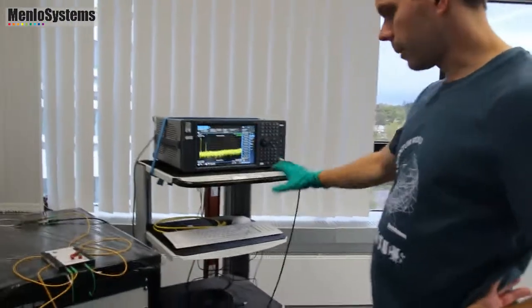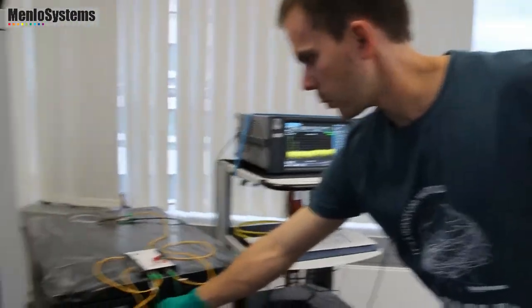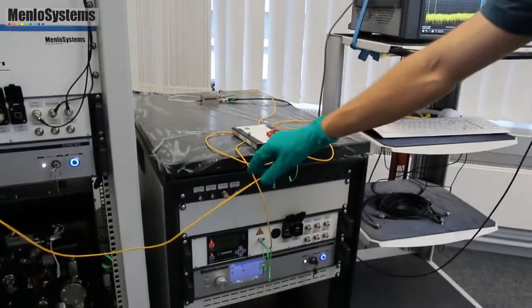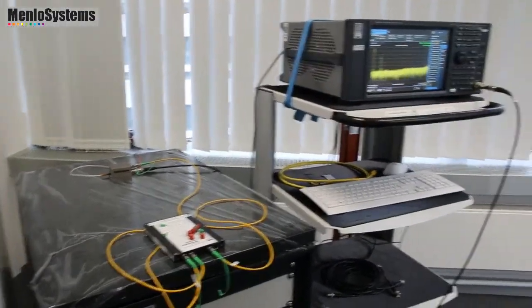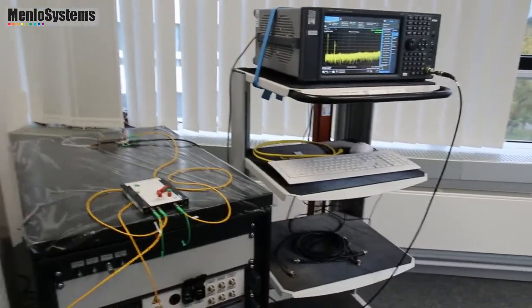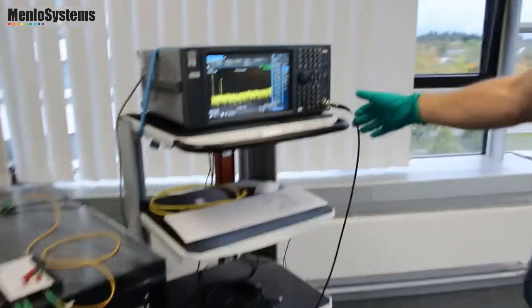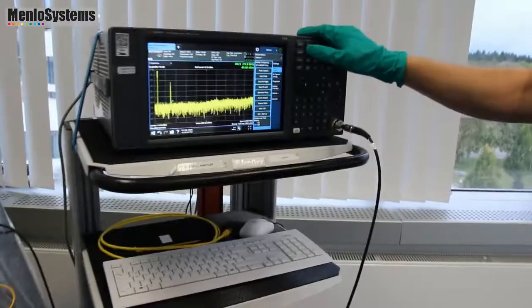So then what we set up here is basically one output here from the Cubic, one from the cylindrical. Here we just have a 50-50 PM coupler and then we got the photodiode here which is enough to generate a heterodyne beat. And here we have a spectrum analyzer which looks at the signal.